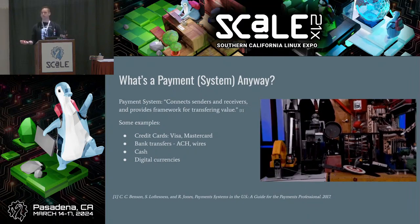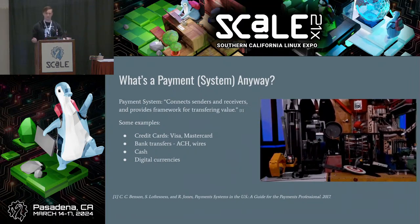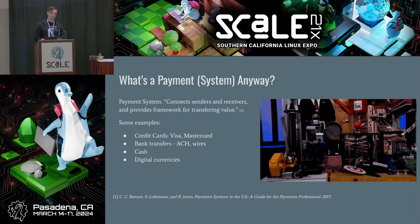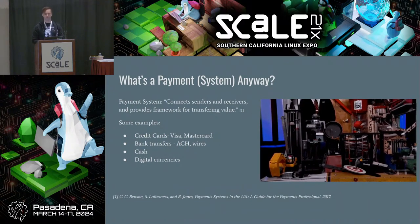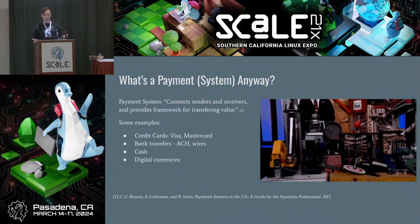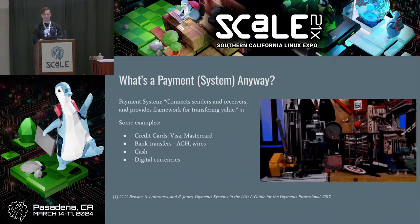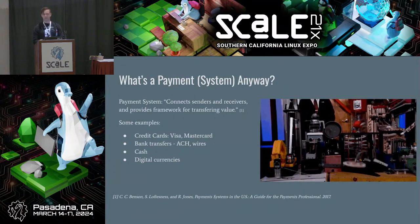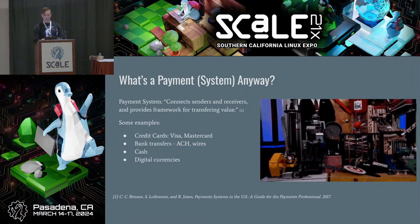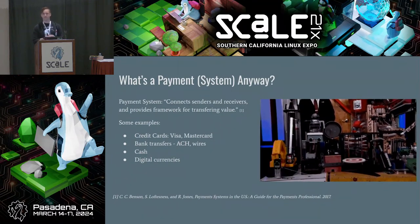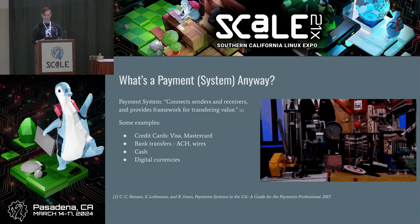So what's a payment system? It probably facilitates payments, but we have a formal definition: it connects senders and receivers and provides a framework for transferring value. Examples include credit cards, bank transfers, cash, digital currencies, Dogecoin, Bitcoin — and this is an example of a Rube Goldberg machine because there's a lot of overcomplicatedness and indirection.